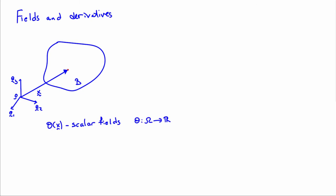For example, we can have scalar fields, so let's say theta of x. Theta is a function that takes points in the body B and returns to us a real number. Say theta is the temperature field, and so that would be an example of a field, it's a scalar valued field.